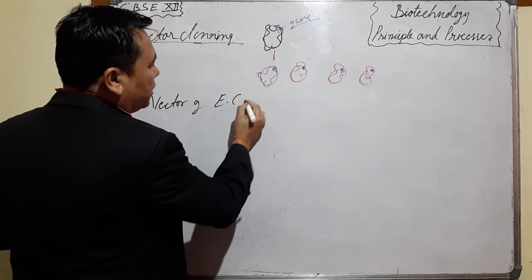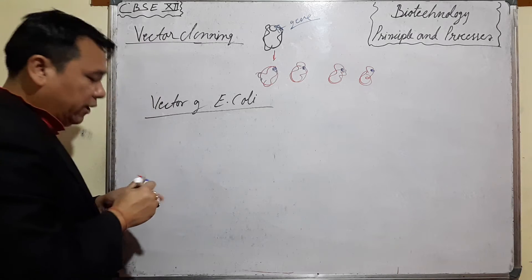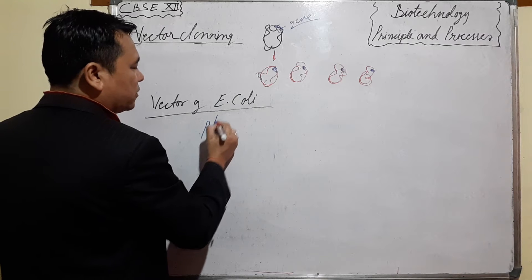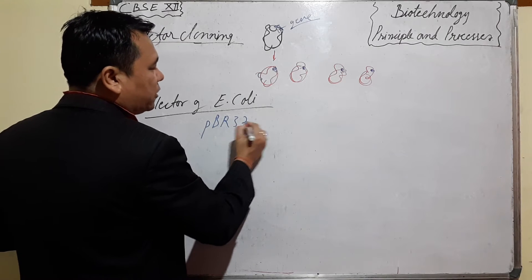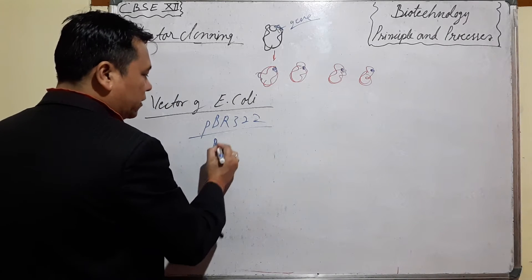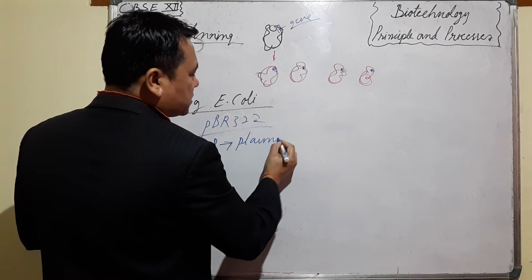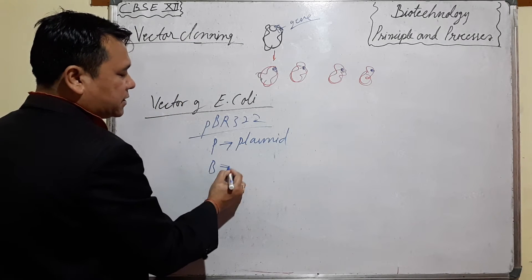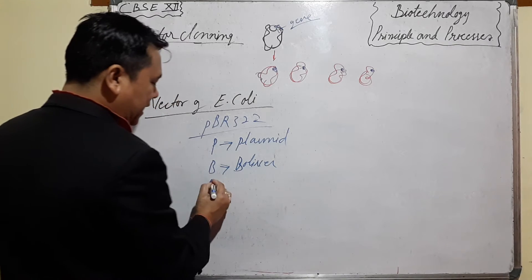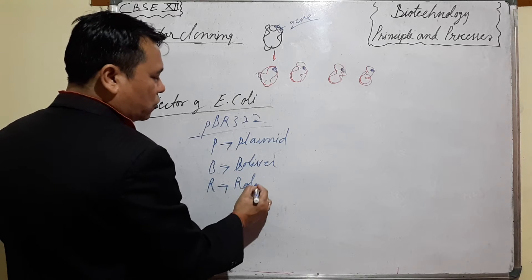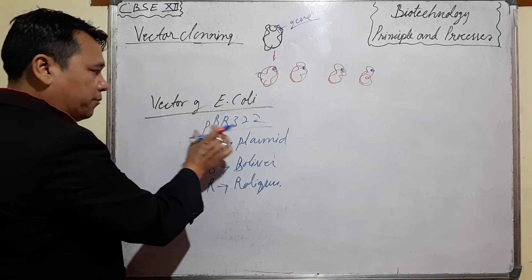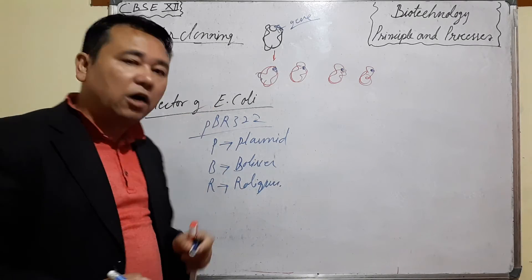The vector of E. coli is called pBR322. It is the vector of E. coli. The name pBR322 comes from: p means plasmid, B and R are the names of the scientists Bolivar and Rodrigues, and 322 is the number. So pBR322 is the vector of E. coli.